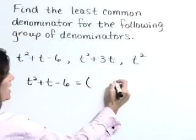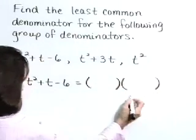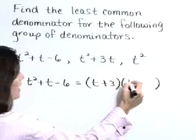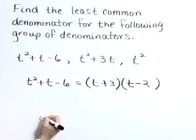This factors as the product of binomials: t plus 3 and t minus 2.